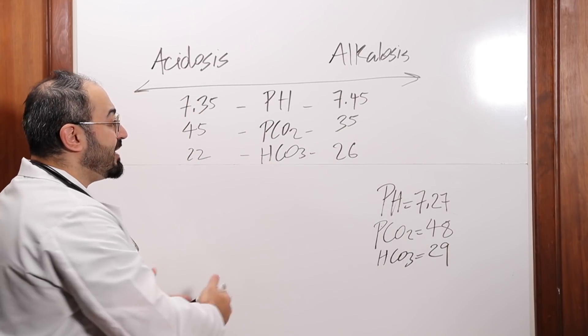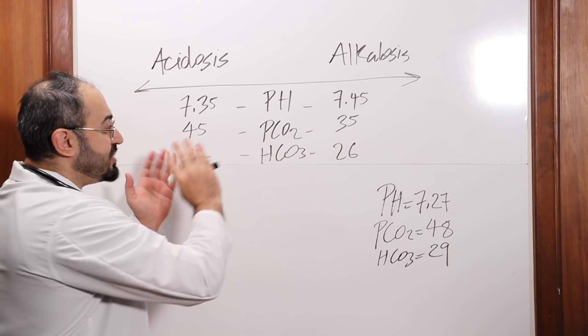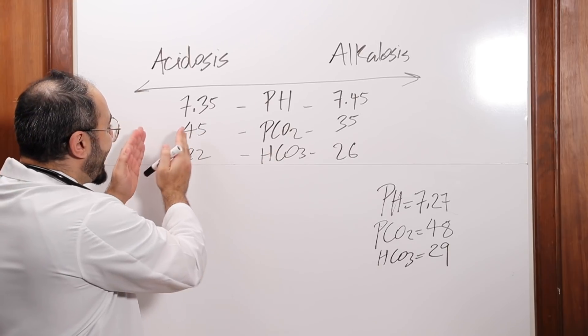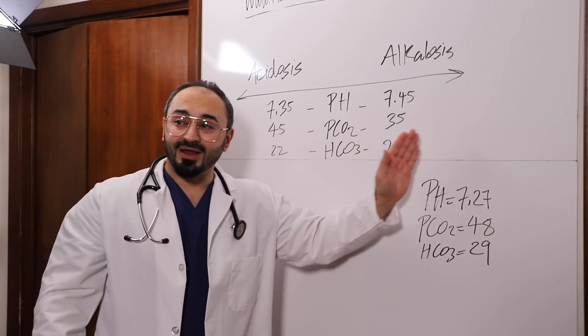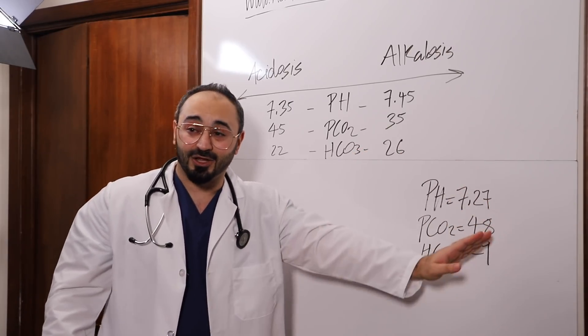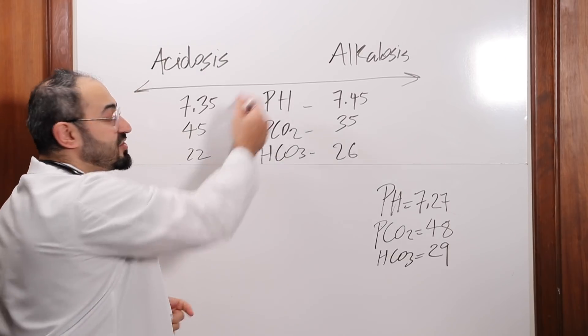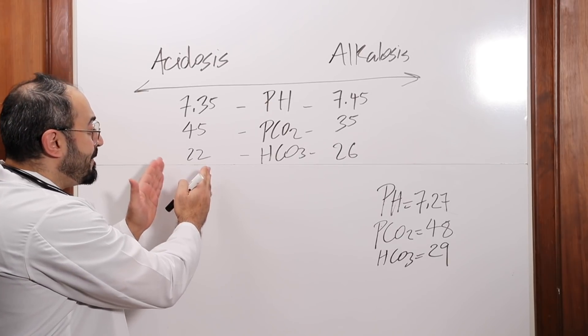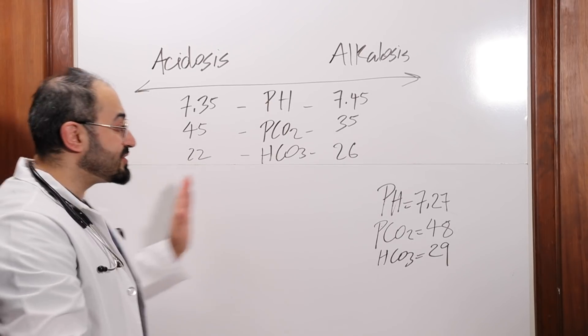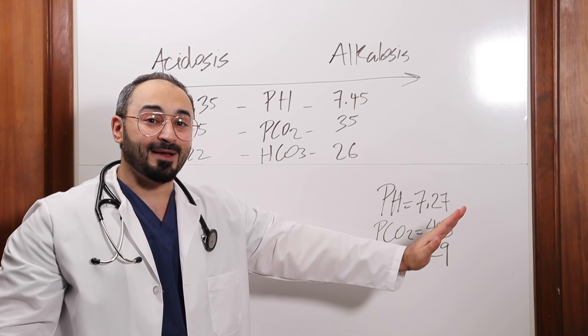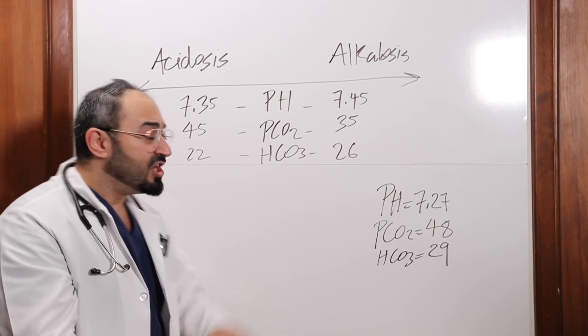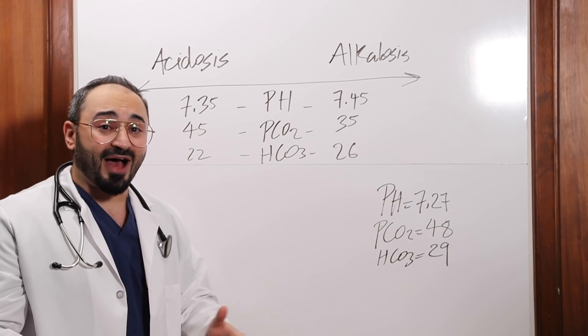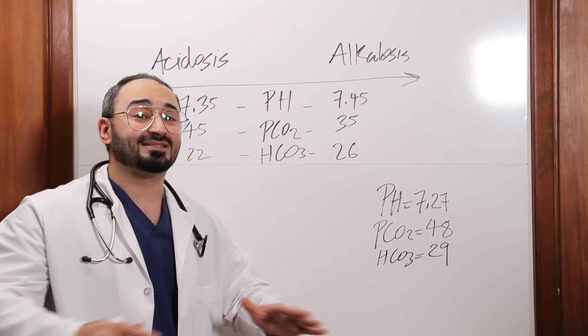PCO2, the normal is between 35 and 45 and you see I switched them. Because anything higher than 45 is gonna be acidosis. Anything lower than 35 is gonna be alkalosis. The CO2 is similar to the pH. So anything lower than 22 is gonna be acidosis. More than 26 is gonna be alkalosis. Make sure you understand those to the T. You need to memorize your normal values. There are three of them, memorize them by heart.